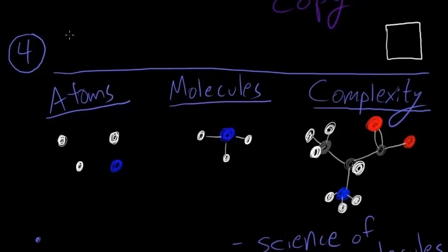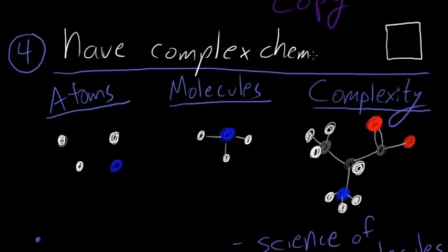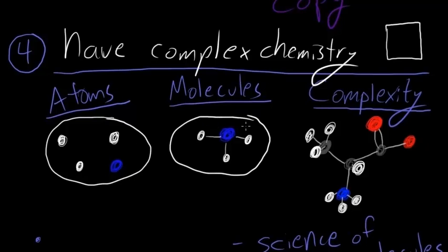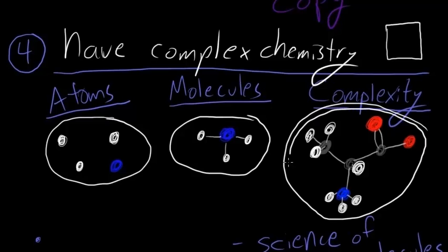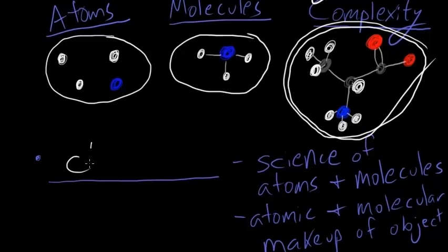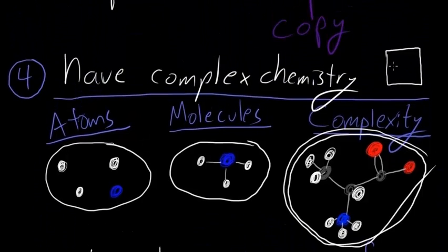Next we saw that all organisms have a complex chemistry. We talked about atoms and molecules. Atoms are some of the smallest pieces of matter and molecules are atoms stuck together. Finally we saw that living things have atoms and molecules that are arranged in a very complex or complicated way. Chemistry is the science of atoms and molecules or the atomic and molecular makeup of an object. All living things have a complex chemistry.